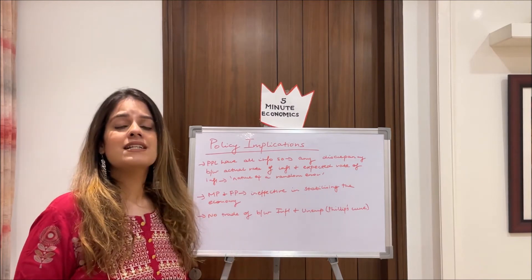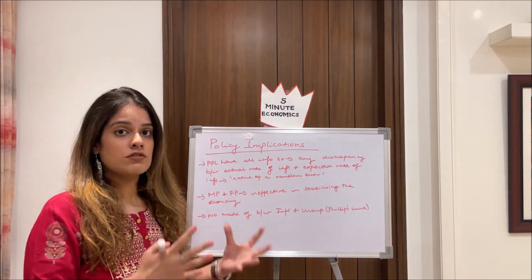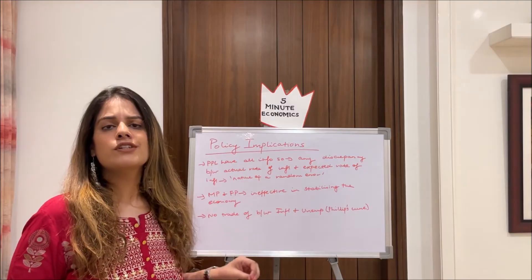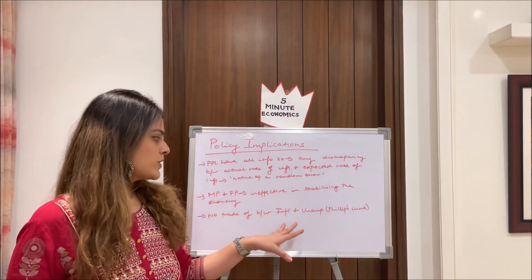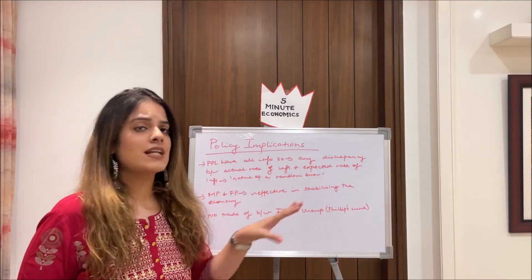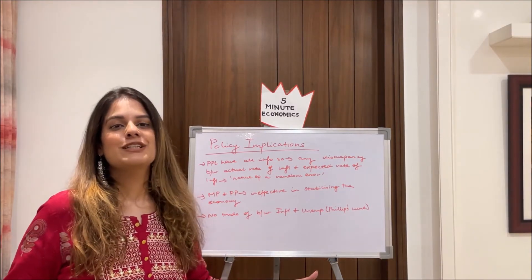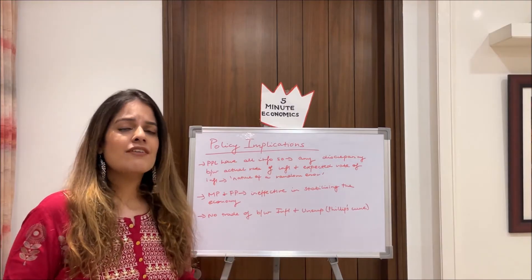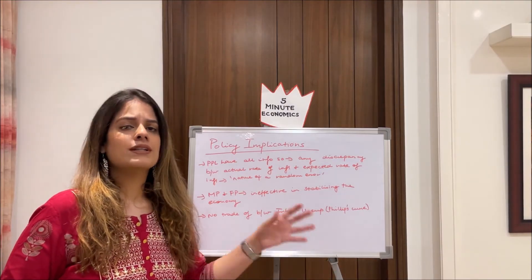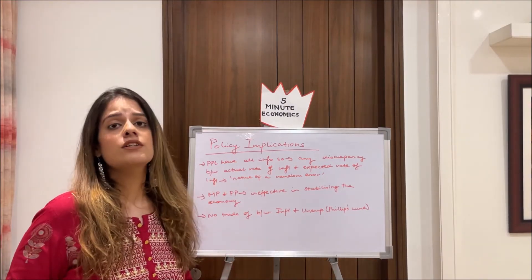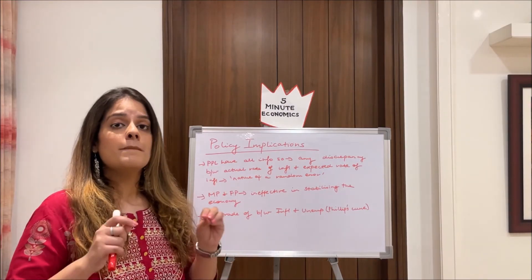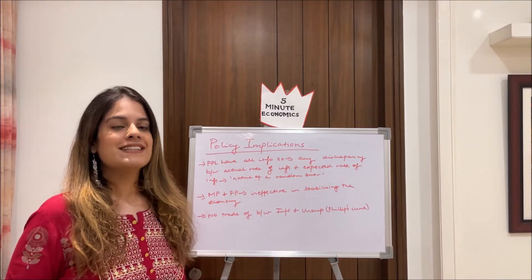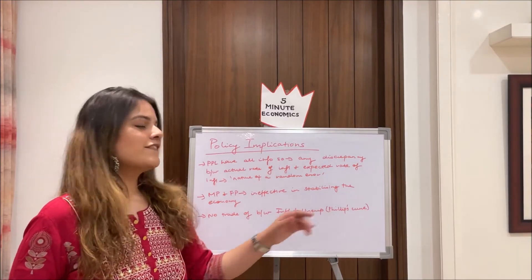RATEX also states that because of rational expectations, there is no trade-off between inflation and unemployment — which is what we studied under the Phillips curve. They have proved the Phillips curve wrong, arguing that not only in the long run but also in the short run, there is no trade-off between these two variables.